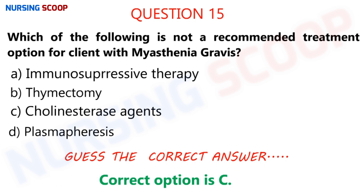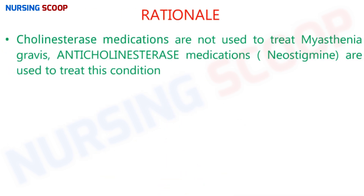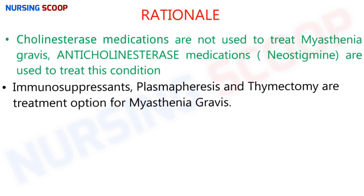The correct option is C. Cholinesterase medications are not used to treat myasthenia gravis — anticholinesterase medications like neostigmine are the treatment of choice. Immunosuppressants are used because it is an autoimmune disease. Plasmapheresis is a plasma exchange therapy used in various autoimmune diseases including myasthenia gravis. Thymectomy is the surgical removal of the thymus gland and can be performed if there is thymus involvement, as 10 to 20% of myasthenia gravis patients have a tumor of the thymus gland.